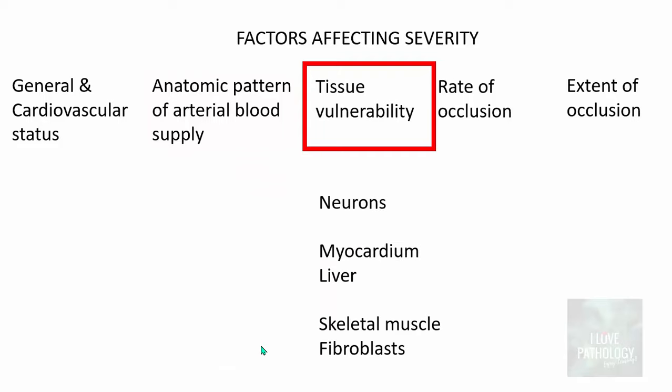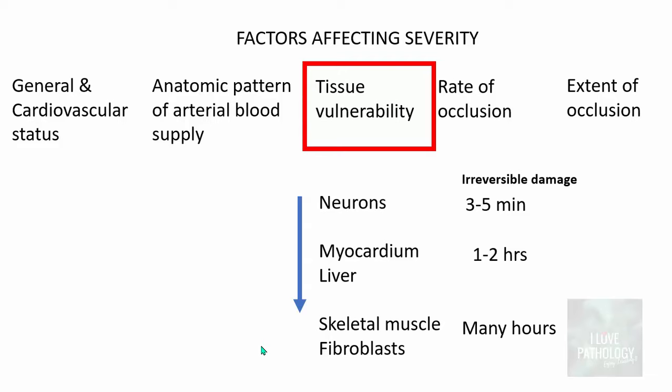Vulnerability of tissue is another important factor affecting severity of infarction. Neurons, myocardium, skeletal muscle, and fibroblasts are listed in decreasing order of vulnerability. Neurons can undergo irreversible damage in as little as three to five minutes. The myocardium and liver may take around one to two hours to develop tissue necrosis. Skeletal muscle and fibroblasts are more resistant to hypoxia and can take many hours before irreversible damage sets in.